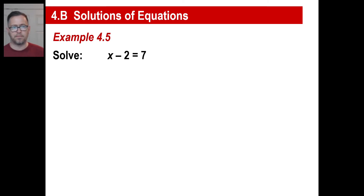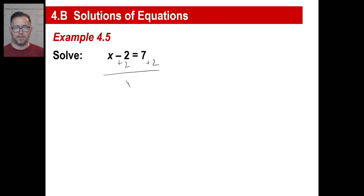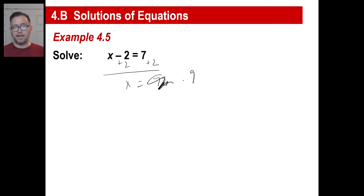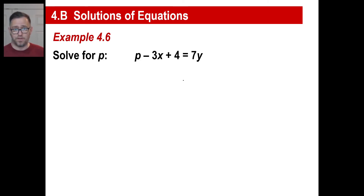Just some old stuff — equations and everything. Here's an easy one: x minus 2 equals 7. The whole point is to get x by itself, so we add 2 to both sides, and 7 plus 2 is 9. Once you know that idea — mash everything else onto the other side and make sure you have just a positive 1x — it works for solving for any variable.